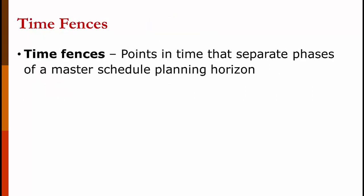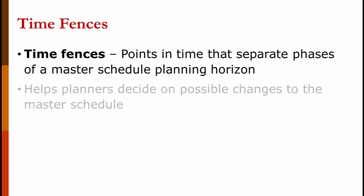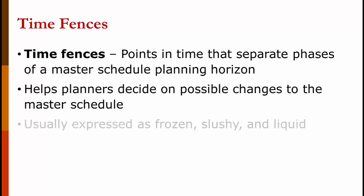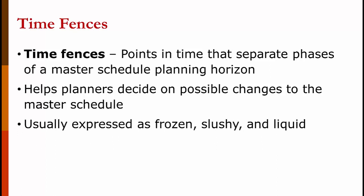The master schedule is broken down by time fences — these are points in time that separate phases of a master schedule planning horizon. They help planners decide on possible changes to the master schedule. The time fences usually divide the future into three broad areas: frozen, slushy, and liquid, where frozen comes first and liquid is further out into the future.